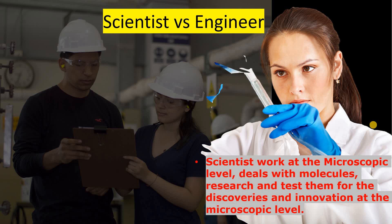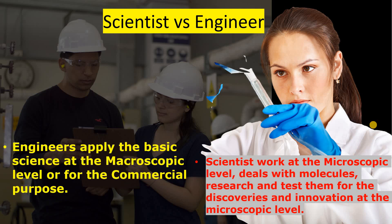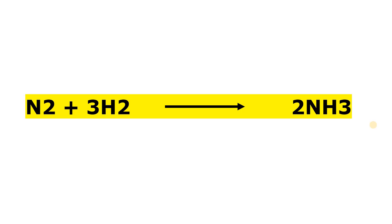What do engineers do? Basically, engineers apply the science — the basic science — at the macroscopic level for commercial purposes. Whatever the scientist is doing at the microscopic level, an engineer will implement that knowledge at the macroscopic level for commercial purpose.